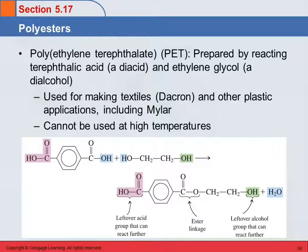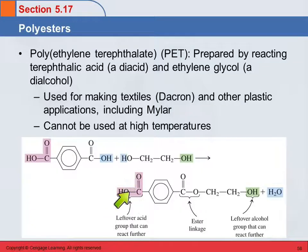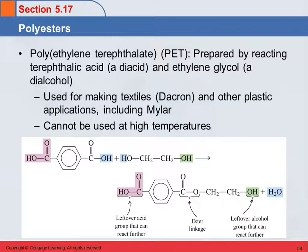Because these are a diacid and a dialcohol, they still have another functional group that can react. The leftover alcohol group can react with a leftover acid group on another molecule, and so you can form a polymer that way. The acid on one side reacted with that alcohol; the acid on the other side can react with a different alcohol. It's like people with two hands — you can hold a hand with one person on this side and one person on the other side, and you can make a long chain.